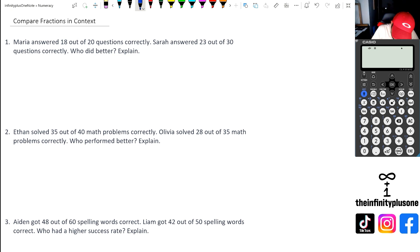So we've got Maria that's actually got 18 out of 20. So we're going to put that as a fraction, 18 out of 20. And then Sarah's got 23 out of 30. So we're going to need to figure out what is the lowest common multiple between 30 and 20. Now, if you are comfortable with these numbers, you kind of know that 60 is the lowest common multiple between these two numbers.